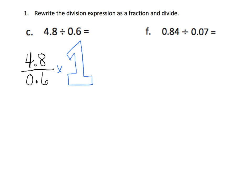I'm going to make my 1 equal to 10 over 10. See, that's still a 1. But now it's going to make my fraction look different — not equal something different, just look different. So I'm going to multiply 4.8 times 10, that gives me 48. And then I'm going to multiply 0.6 times 10, and that gives me 6.